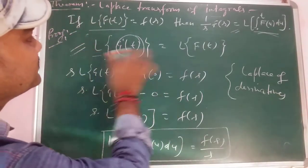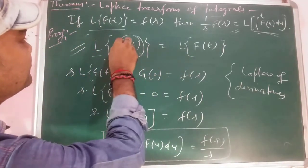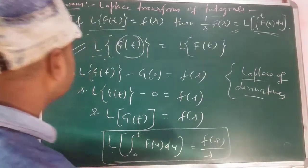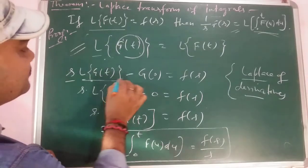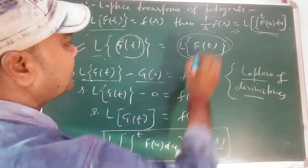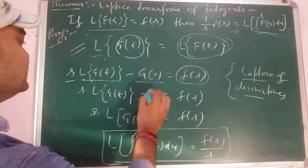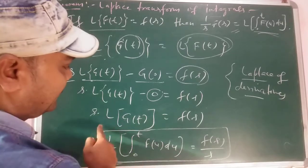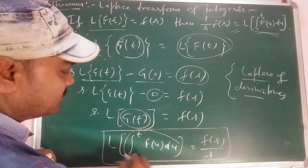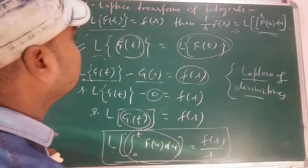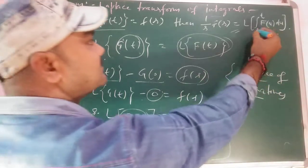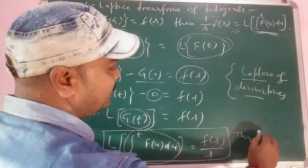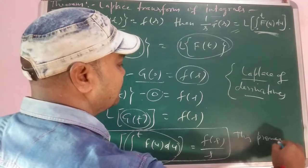So from here we had to take Laplace of both sides, and Laplace of a derivative gives s·L{g(t)} − g(0) = F(s). With g(0) = 0, we get L{∫₀ᵗ f(u) du} = F(s)/s. In this way we can take the Laplace transform of such a function, and this proves the theorem.